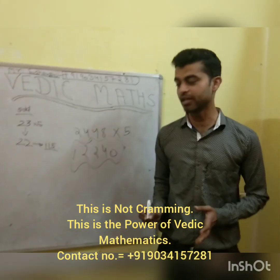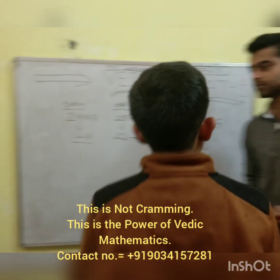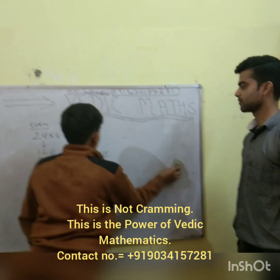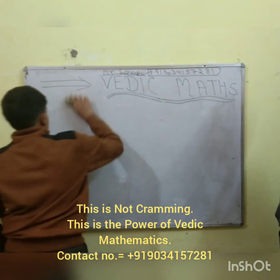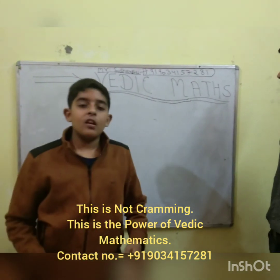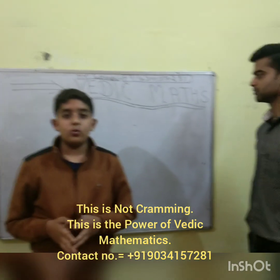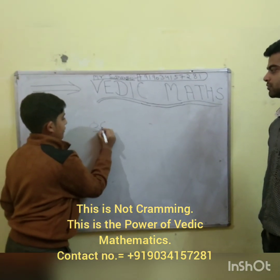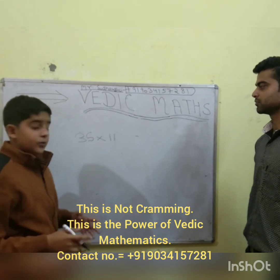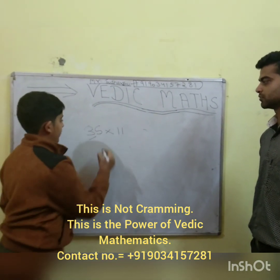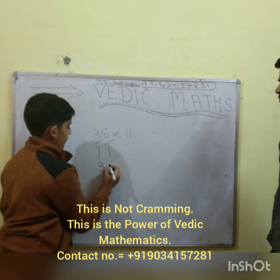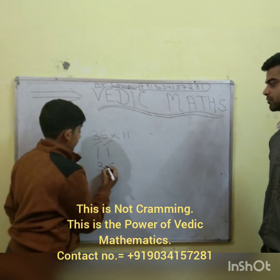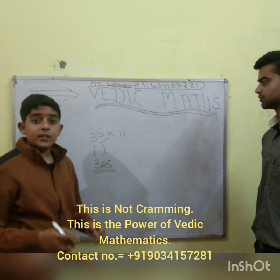So, Arnav, can you come here and explain the trick of 11? Yes, sir. Hello friends, I am Arnav and today I am going to explain you the trick of how to multiply any number with 11. For example, 35 × 11. We have to take the first number as it is and the second number as it is, and then we have to put the sum of these numbers in between. The sum is 8, and the answer will be 385.